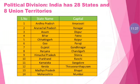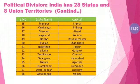The states and their capitals are: Andhra Pradesh – Amaravati, Arunachal Pradesh – Itanagar, Assam – Dispur, Bihar – Patna, Chhattisgarh – Raipur, Goa – Panaji, Gujarat – Gandhinagar, Haryana – Chandigarh, Himachal Pradesh – Shimla, Jharkhand – Ranchi, Karnataka – Bangalore, Kerala – Thiruvananthapuram, Madhya Pradesh – Bhopal, Maharashtra – Mumbai, Manipur – Imphal, Meghalaya – Shillong, Mizoram – Aizawl, Nagaland – Kohima, Odisha – Bhubaneswar, Punjab – Chandigarh, Rajasthan – Jaipur, Sikkim – Gangtok, Tamil Nadu – Chennai, Telangana – Hyderabad, Tripura – Agartala, Uttarakhand – Dehradun, Uttar Pradesh – Lucknow, West Bengal – Kolkata.